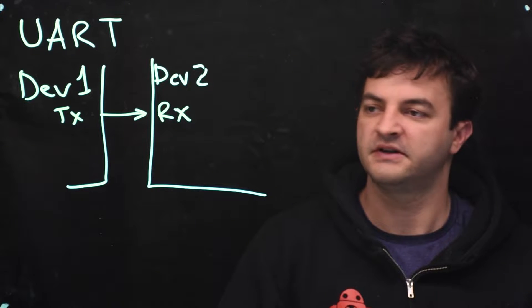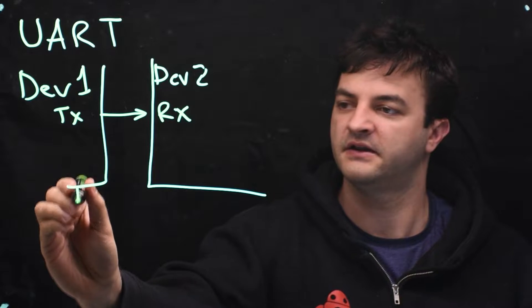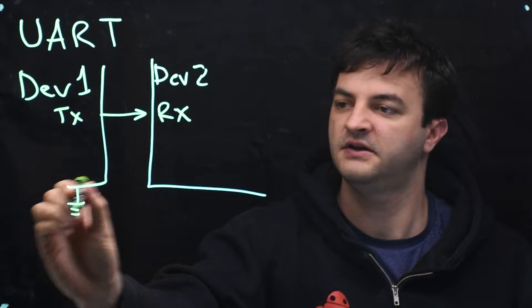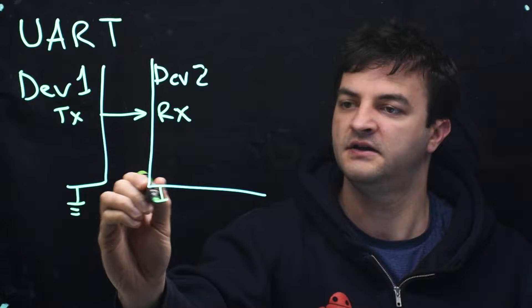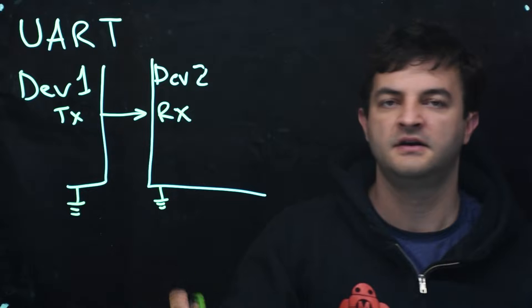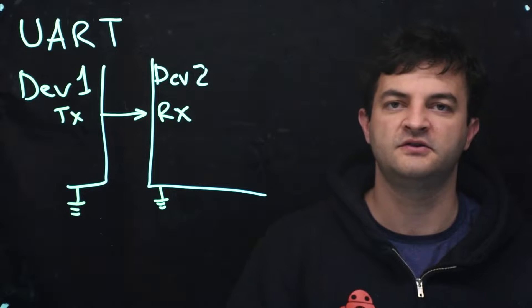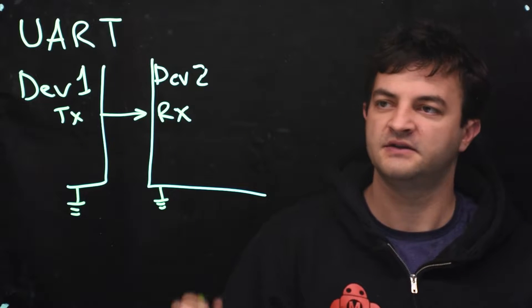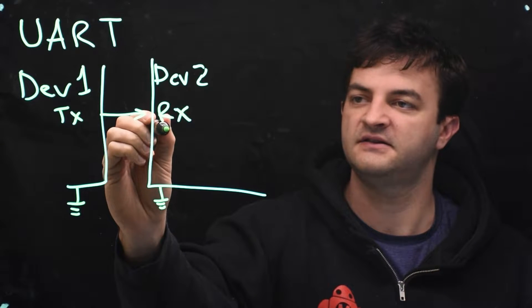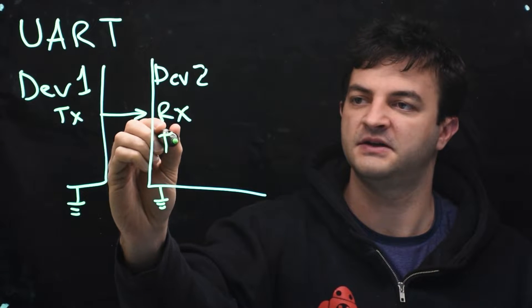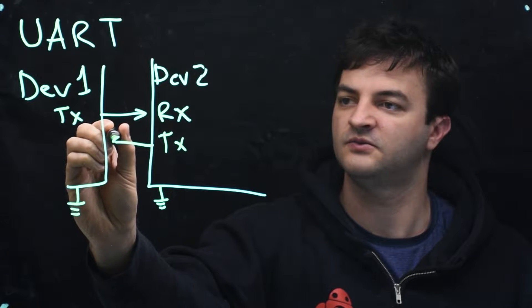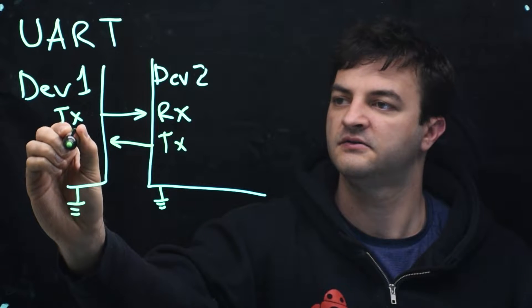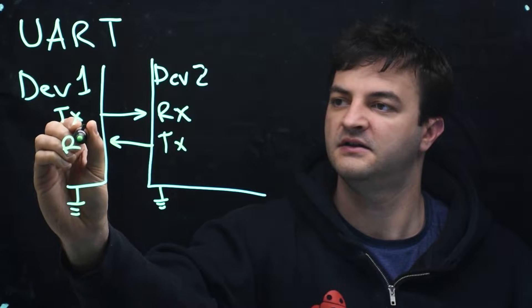And that's all that's really necessary other than a common ground. Now if device two wants to talk back to device one, device two would have its transmit pin connected to device one's receive pin.